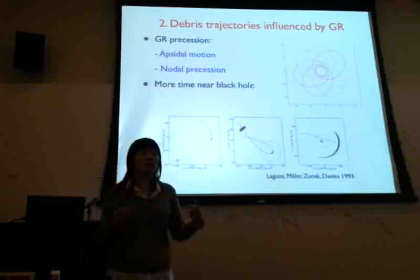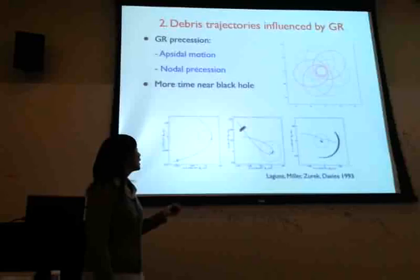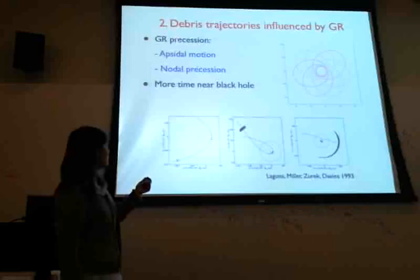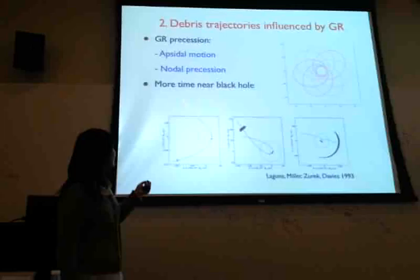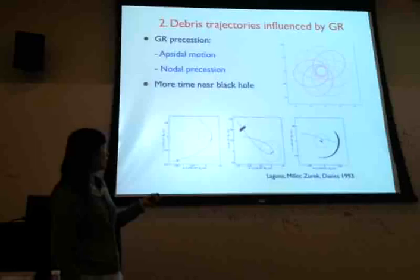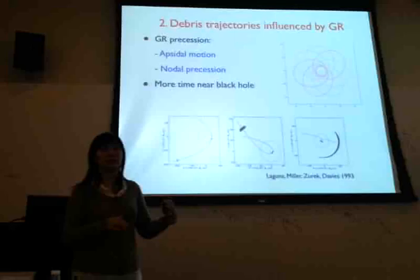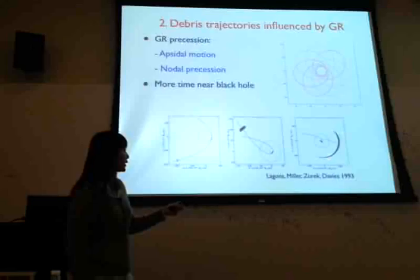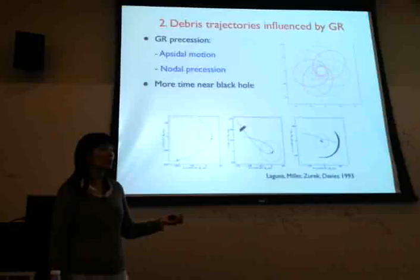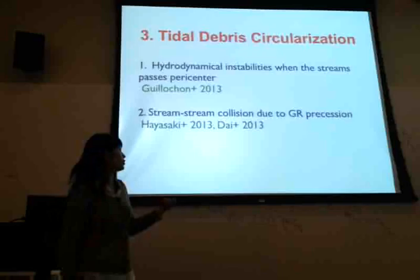GR precession not only changes the debris fallback time, but also has other dynamical effects. For example, as simulated by Laguna in 1993 using SPH simulations, apsidal motion causes the debris to spend more time near the black hole than in the Newtonian model, being more affected by strong gravity, which can produce a different debris particle distribution in the stream orbit.